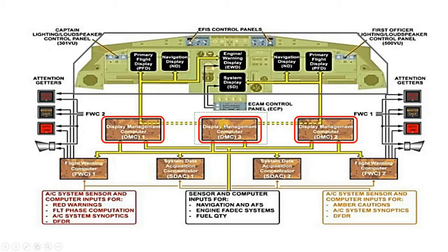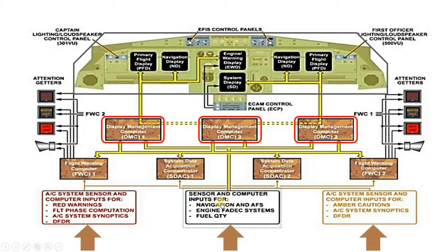The DMCs get their information from the System Data Acquisition Computers (SDACs), which are two in number. The SDACs gather information from different aircraft systems — sensors and computer inputs for navigation, flight systems, engine data, and fuel quantity — as well as for red warning lights, flight phase computation, aircraft system synoptic displays, and the DFDRs.